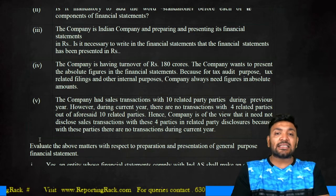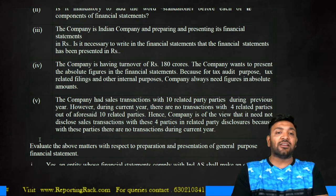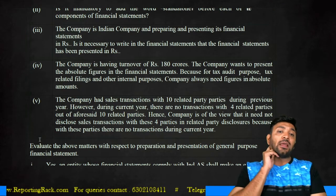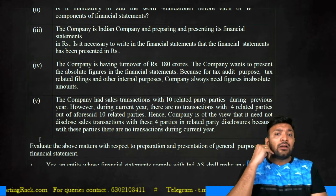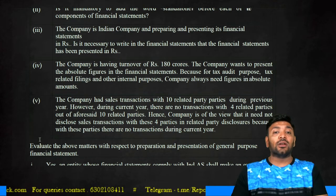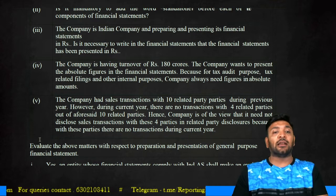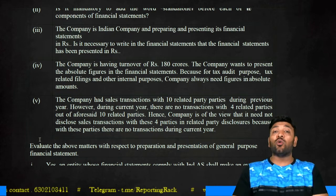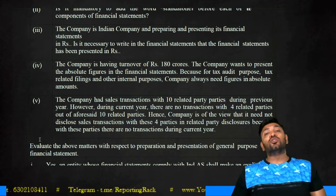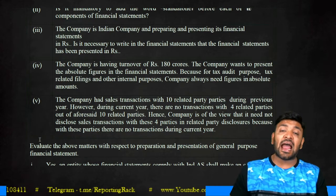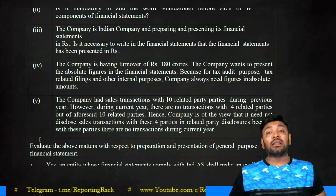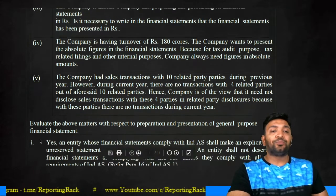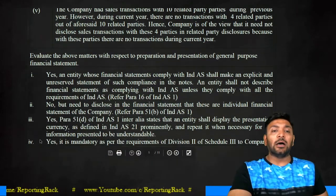The company had sales transactions with 10 related parties during the previous year. However, during the current year there is no transaction with respect to 4 of those 10 related parties. The company is of the view that it is not required to disclose transactions with these four related parties. Remember, you always present financial statements on a comparative basis, so even though there is no transaction in the current year, they had transactions in the previous year and therefore have to be presented as comparable.